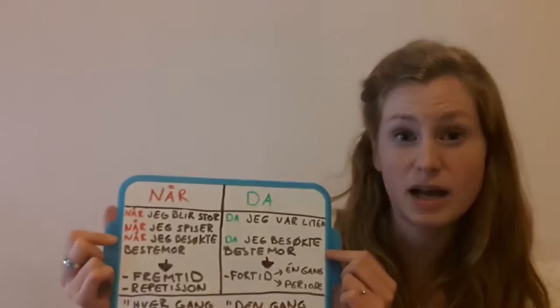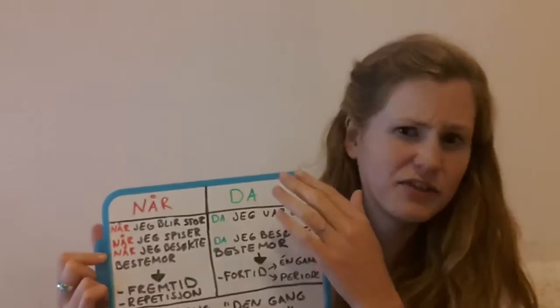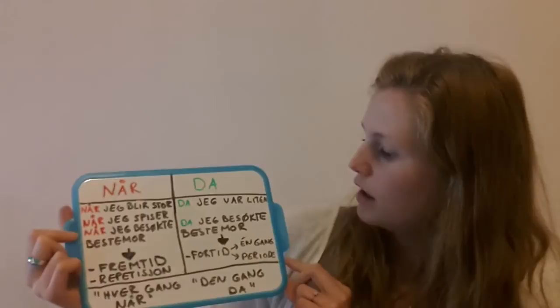DA is for the past, for one-time happenings, or for periods. 'DA JEG VAR LITEN' — 'when I was little'. It's like one happening — it's one long period.